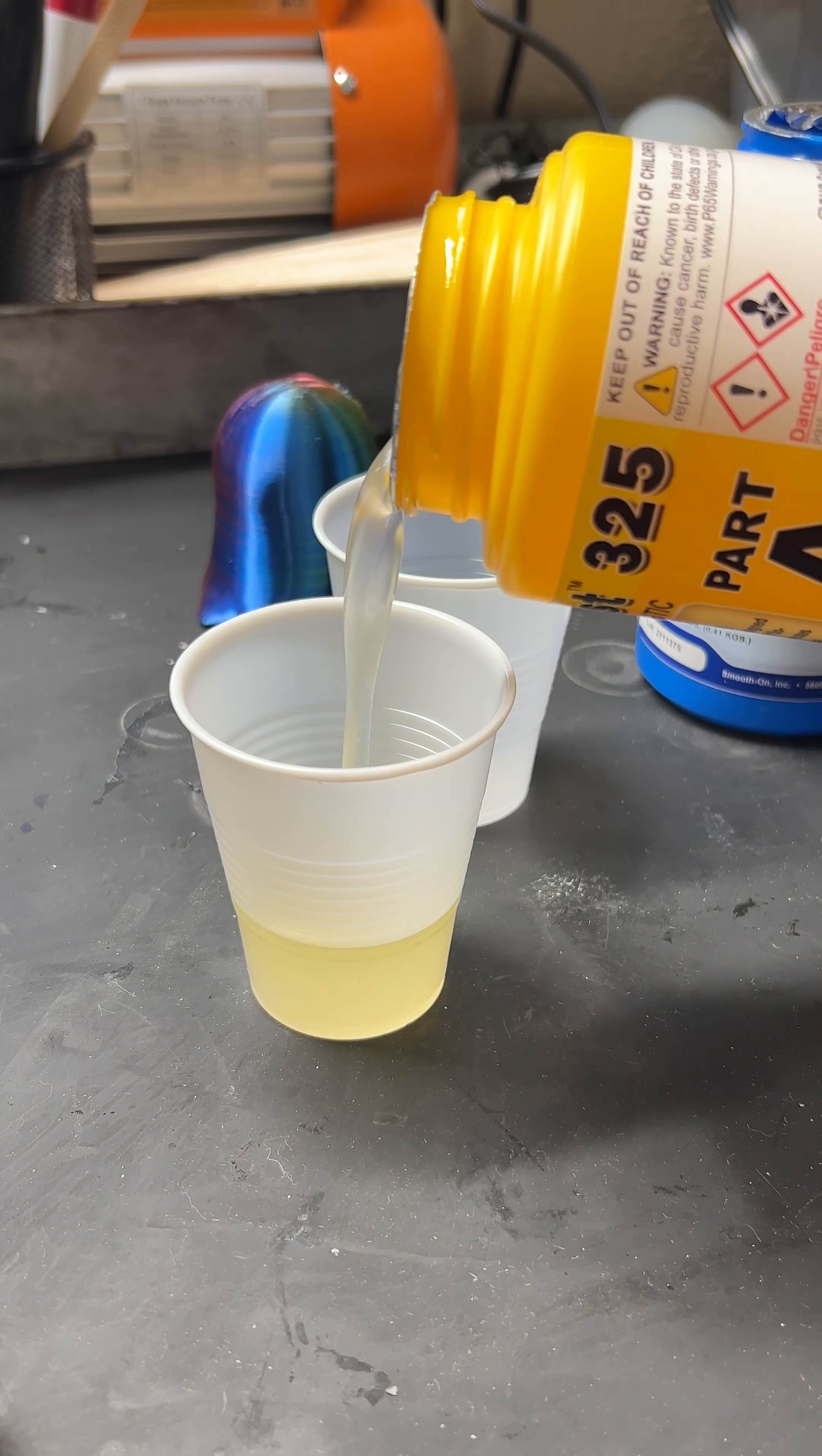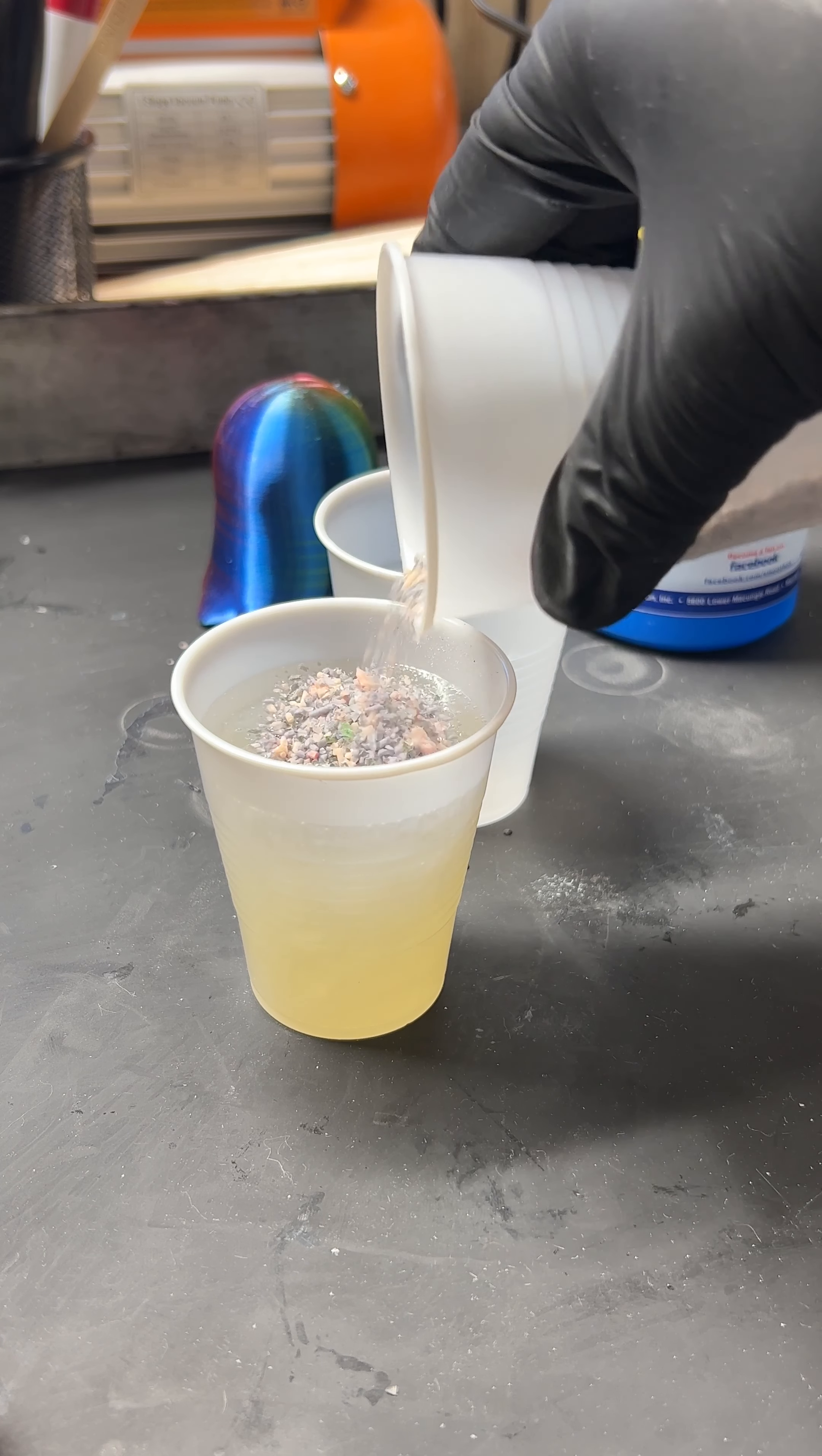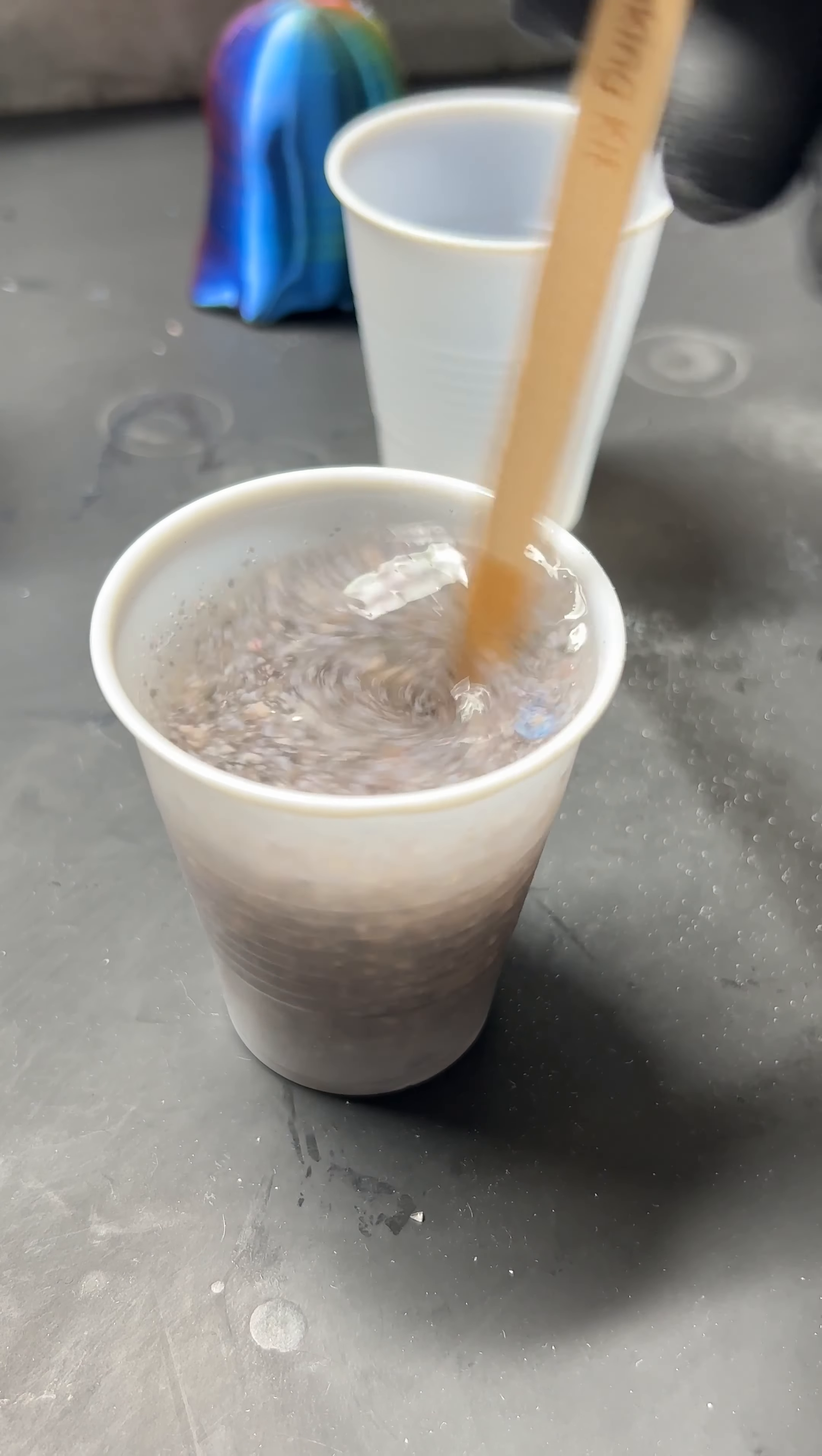I picked up some of this casting material from my local art store. I mixed equal parts A and B together in a cup. When these two chemicals mix together, I have two minutes of workable time. I pour in the grounded up supports and give it a stir. Already, you can feel the heat that's coming from this chemical reaction.